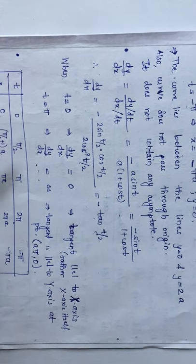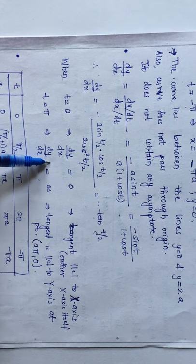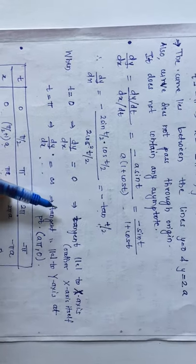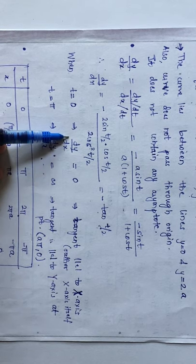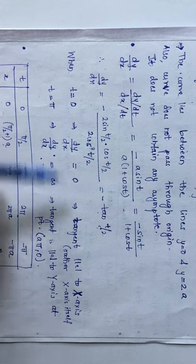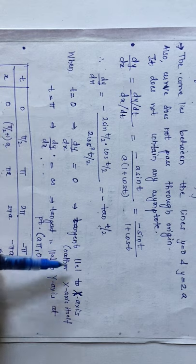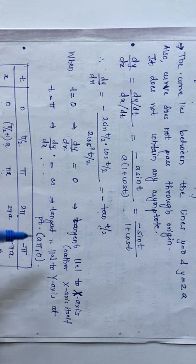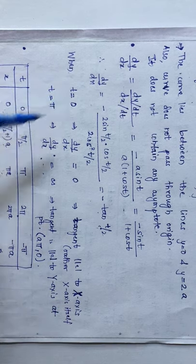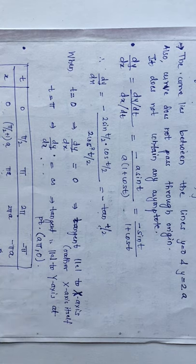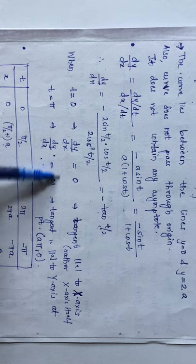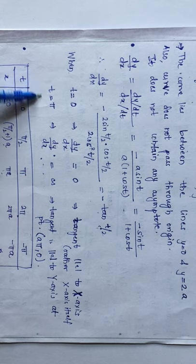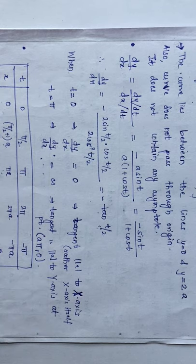When t = 0, dy/dx = 0, so the tangent is parallel to the x-axis — in fact, it is the x-axis itself, since at t = 0, x = 0 and y = 2a. Wait — rather, at t = 0 the curve passes through (0, 2a) and the tangent is horizontal. When t = π, dy/dx = ∞, meaning the tangent is parallel to the y-axis.